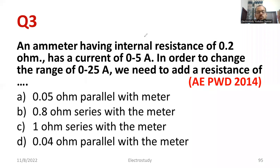Another one is an important question. For this examination, it is repeated AE PWD and Kerala PSC 2014. An ammeter having an internal resistance of 0.2 ohm. So everybody please note RM is equal to meter resistance equal to 0.2. Then it has a current of how much? 0 to 5 ampere. So I will be writing IM is equal to meter current, current which is flowing through the meter, that is equal to 5 ampere. 0 to 5 is nothing but 5 amps.